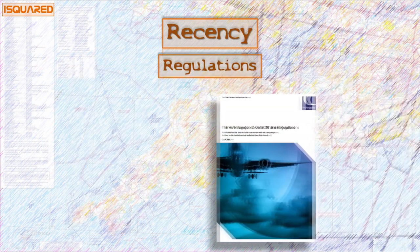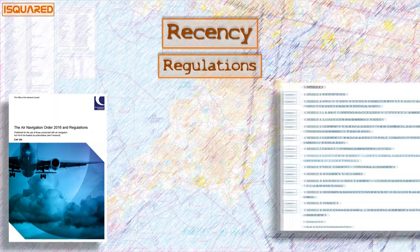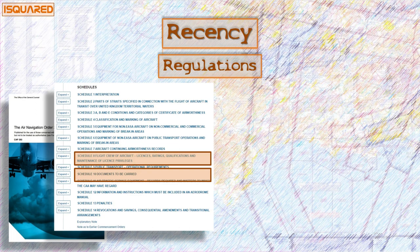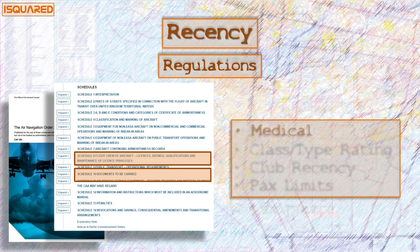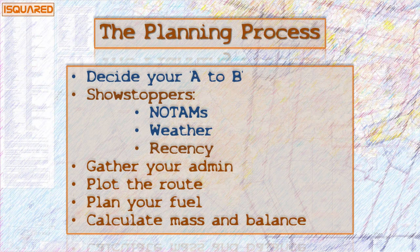That's the weather checked. Now on to some regulations. The CAP 393 is the Air Navigation Order which you can easily find online — bear in mind a downloaded copy won't be updated. It's full of regulations regarding flying in the UK, including information on licences, qualifications, ratings, and what documents we need to carry. Make sure your medical is in date, your type rating is valid, and you satisfy any club rules — you'll normally need at least three takeoffs and landings in the last 90 days if carrying passengers. We're current, no showstoppers, so now it's time to do some research.